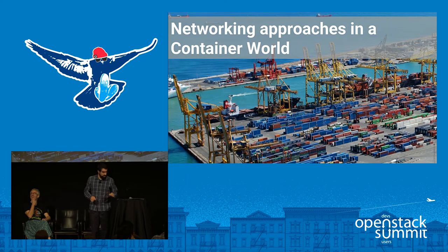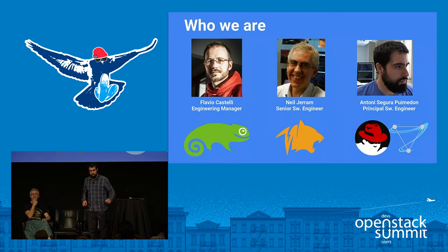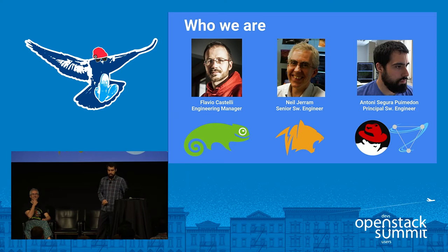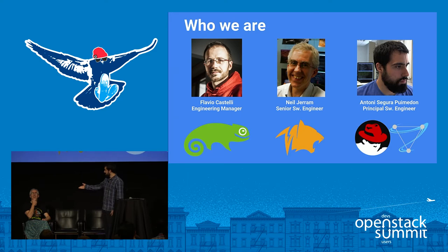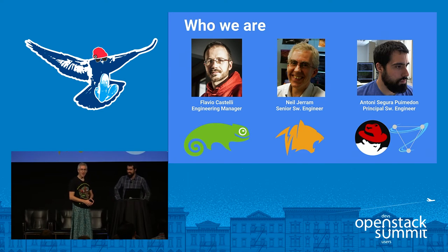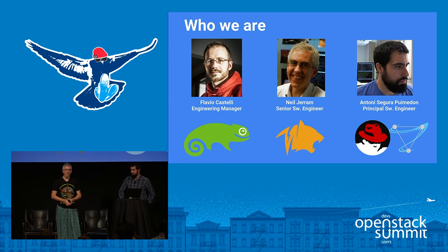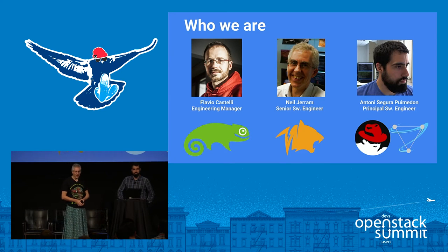Before we do that, let's introduce ourselves. I'm Antoni Sogora-Puimedon. I work at Red Hat, and that second logo is from the Superfluidity Project which has a lot to do with containers and microservices. I'm Neil Jerem, with a company called Tegera, which is the originator of the Calico project.